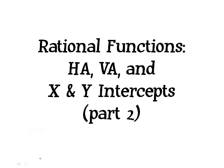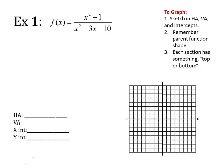Okay, this video is a continuation of rational functions. These equations will be a little more complex, but we're still just finding horizontal asymptote, vertical asymptote, x and y intercepts. Let's just look at this. So my first equation: x squared plus 1 over x squared minus 3x minus 10.